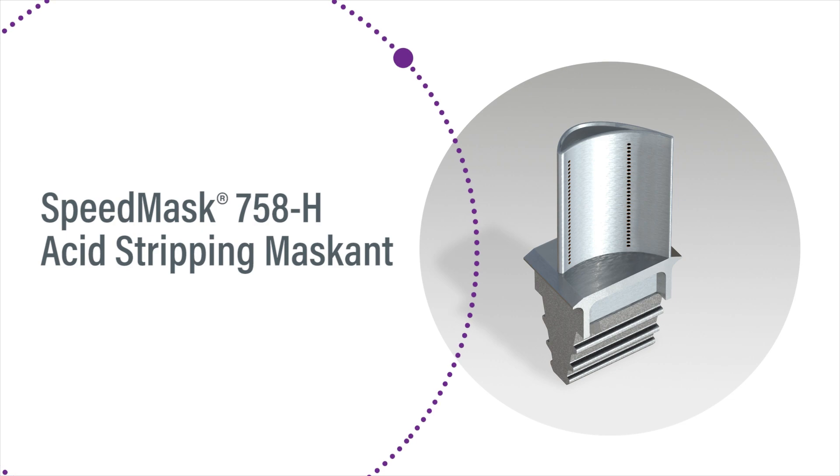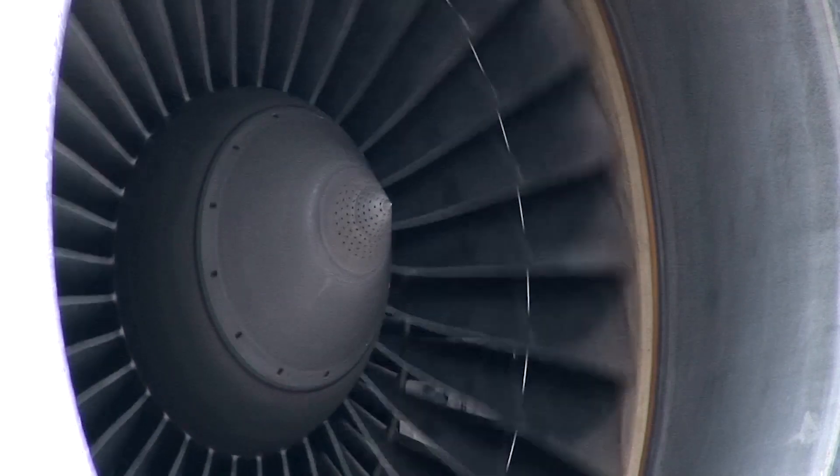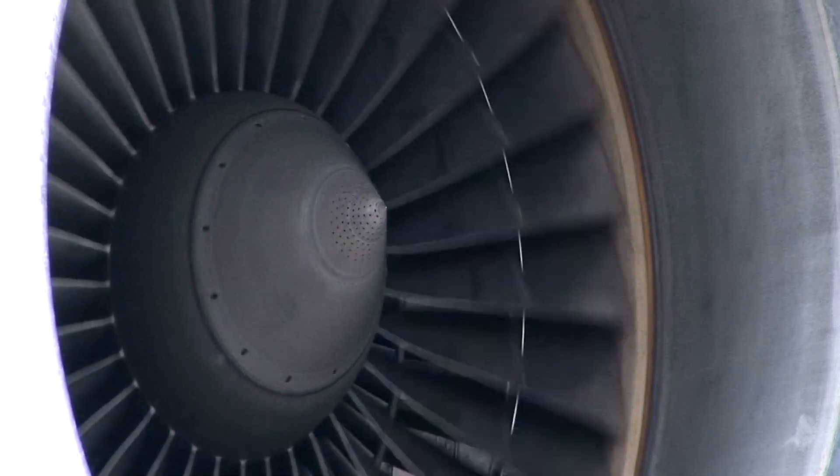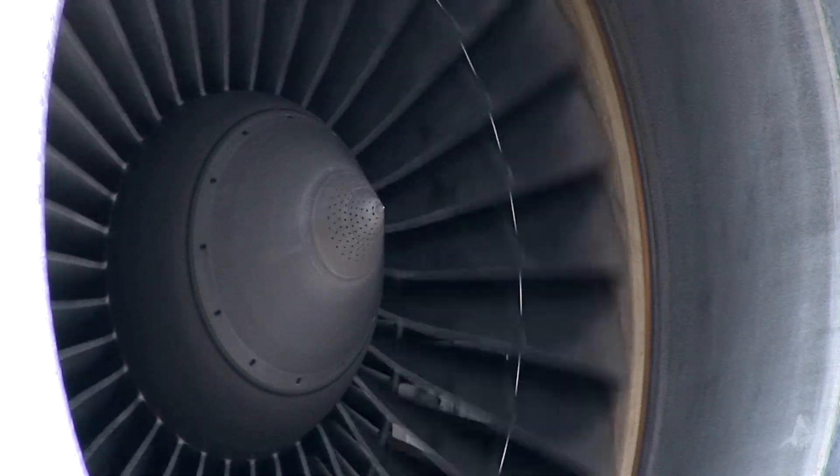Speedmask 758H is a high-performance masking that aids in the manufacture, overhaul, repair, and rework of turbine engine blades, vanes, and other turbine components.